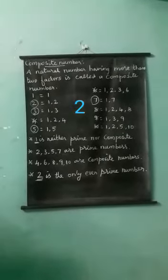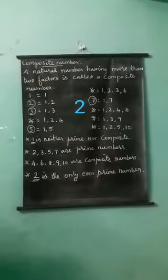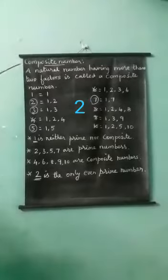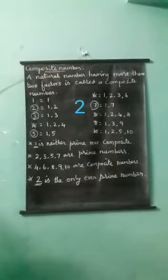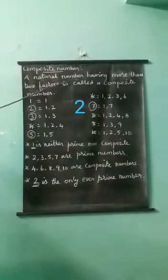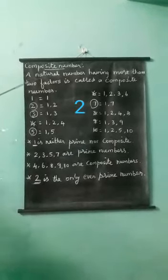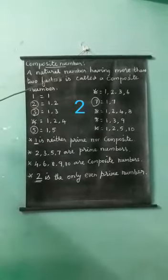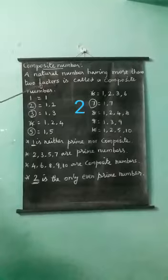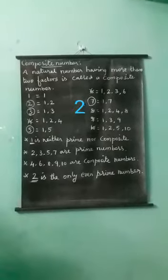Dear students, next we see the composite numbers. What is the meaning of composite number? A natural number having more than 2 factors is called a composite number. I repeat: a natural number having more than 2 factors is called a composite number.